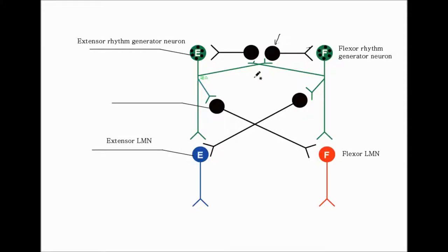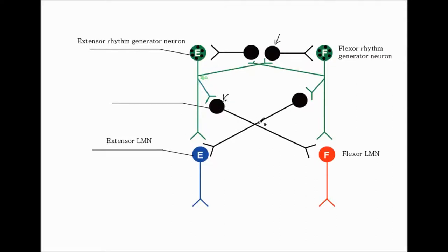Let's look at this interneuron. Whenever this branch sends the action potential signal and releases the inhibitory neurotransmitter to this inhibitory interneuron, it automatically silences the flexor rhythm generator, and vice versa. Similarly, this inhibitory interneuron, whenever it's excited by this rhythm generator, automatically silences the flexor lower motor neuron.